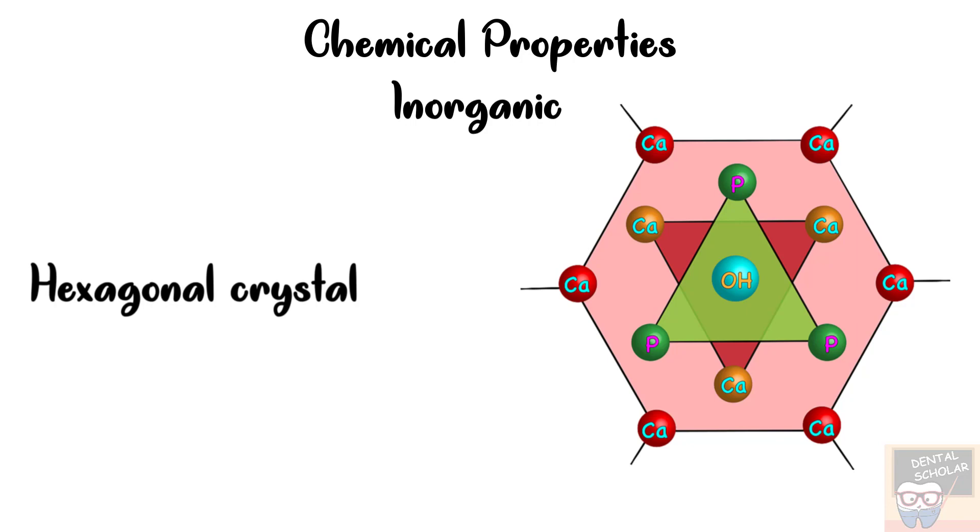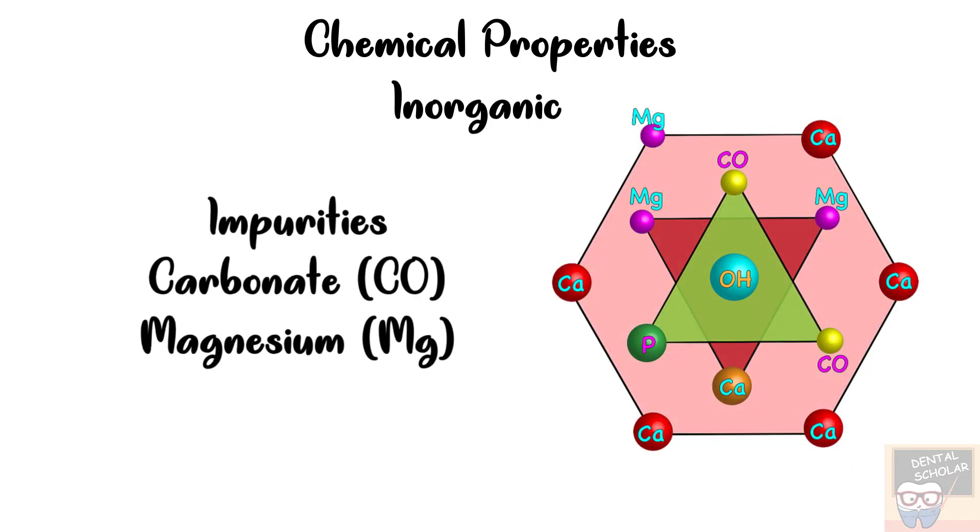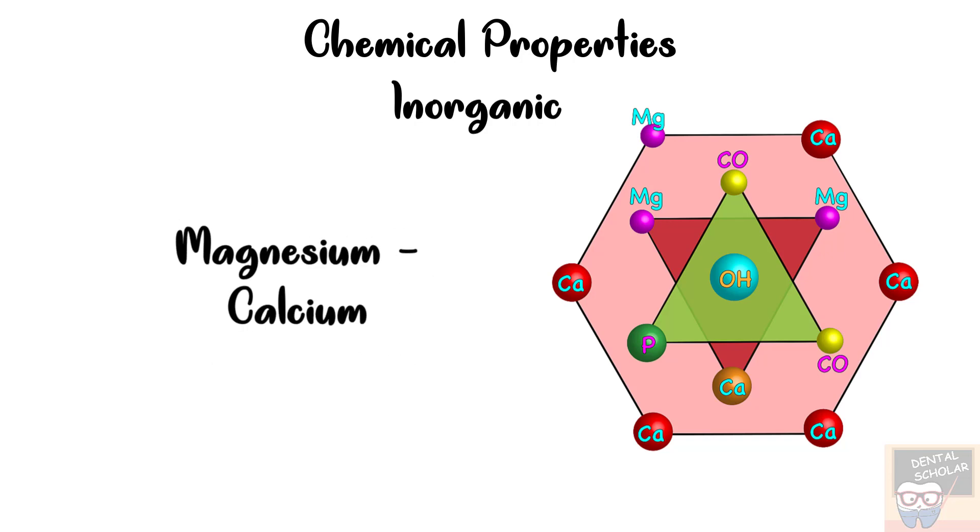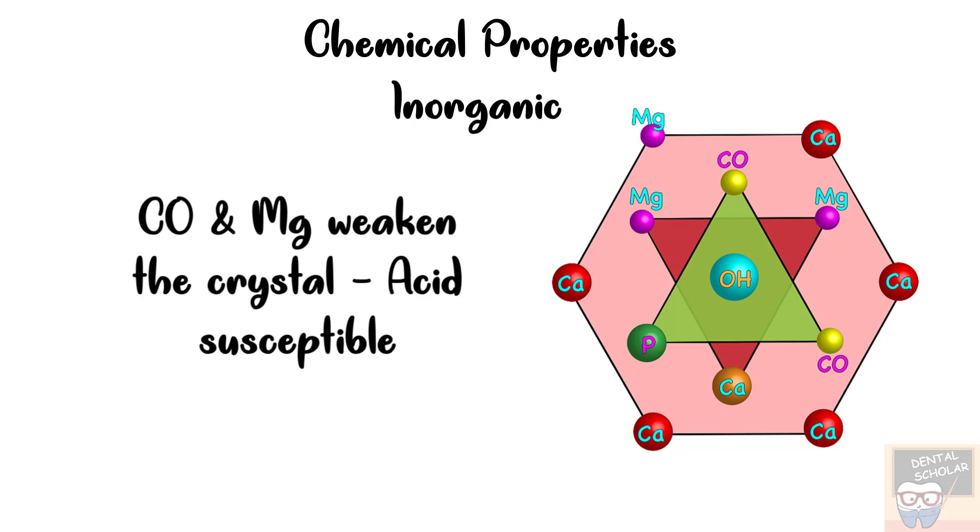When the crystal is newly formed it also may contain some impurities like carbonate and magnesium. Carbonate usually substitutes phosphate so in about 90 percent cases it would substitute phosphate. But rarely it may also substitute hydroxyl ion so in about 10 percent cases it may substitute hydroxyl ion. Magnesium is positively charged and it would substitute calcium. Both these substitutions that is carbonate and magnesium weaken the crystal and make them more acid susceptible or acid soluble.